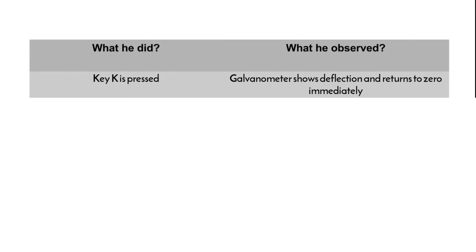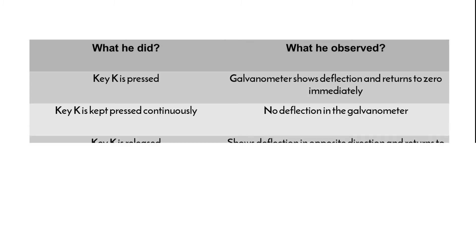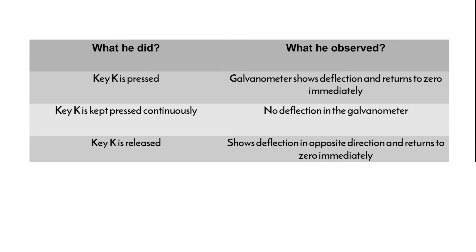When the key is switched on, the galvanometer shows a momentary deflection and then immediately returns to zero. When the key K is kept pressed continuously, there is no deflection in the galvanometer. When the key K is released, the galvanometer again shows deflection but in the opposite direction, and then immediately returns to zero.